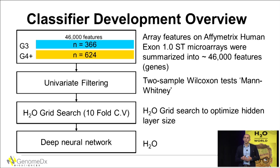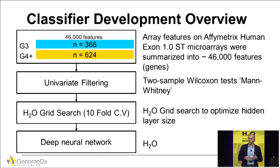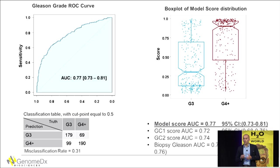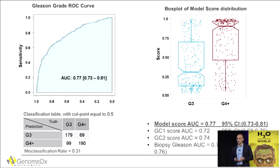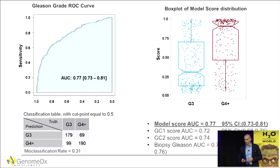We used H2O grid search with 10-fold cross-validation, using rectifier dropout and optimizing the number of layers and size of hidden neurons. We found that three layers performed best in cross-validation. We locked this model, passed it to our biostatistics team, and they did the analysis on the testing data. The AUC was 77. We were also trying to find if these new algorithms would do better than some of our existing genomic classifiers — and it did, performing better than the biopsy Gleason, which was 72.